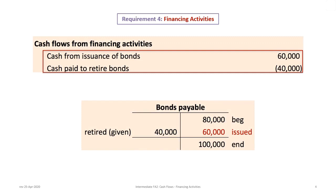We look at the non-current liability section of the balance sheet and start reconstructing the accounts. For bonds payable, we have an $80,000 beginning balance and a $100,000 ending balance. We're told the company retired $40,000 in bonds, which goes on the debit side. But 80 minus 40 does not equal 100, so the T-account doesn't balance — something else must have happened.